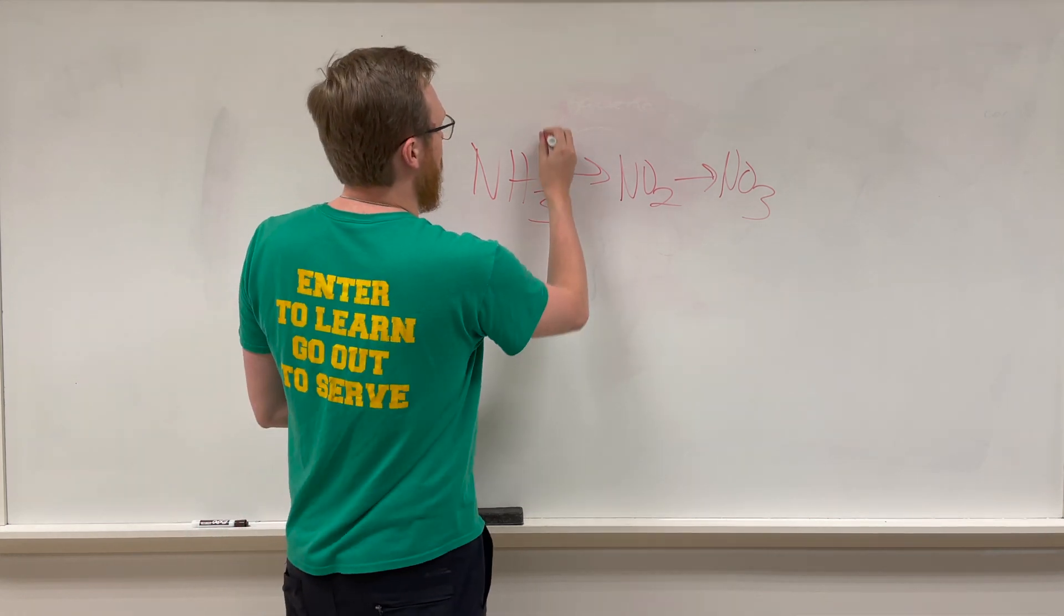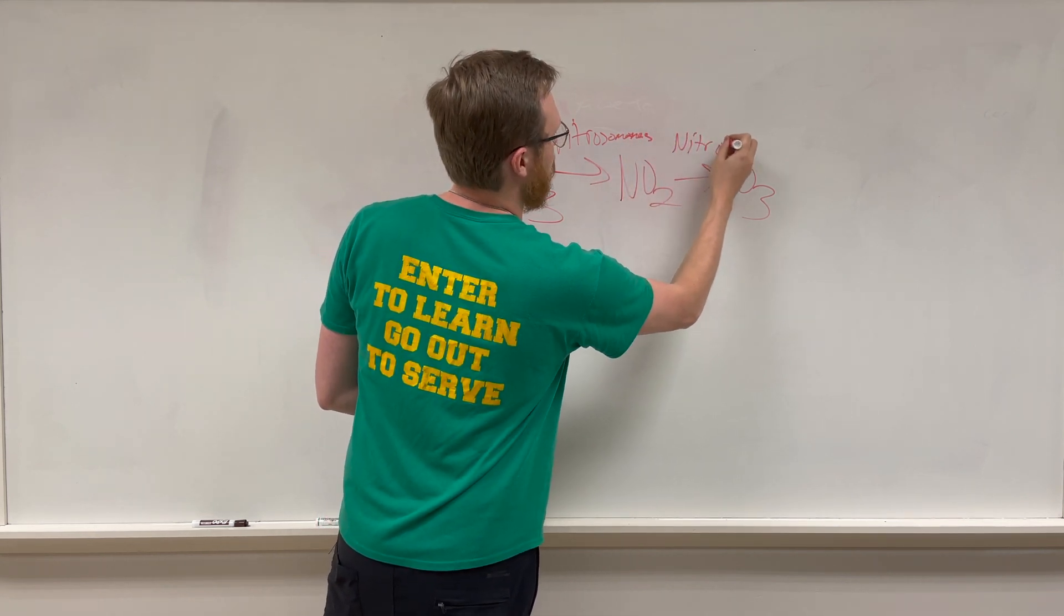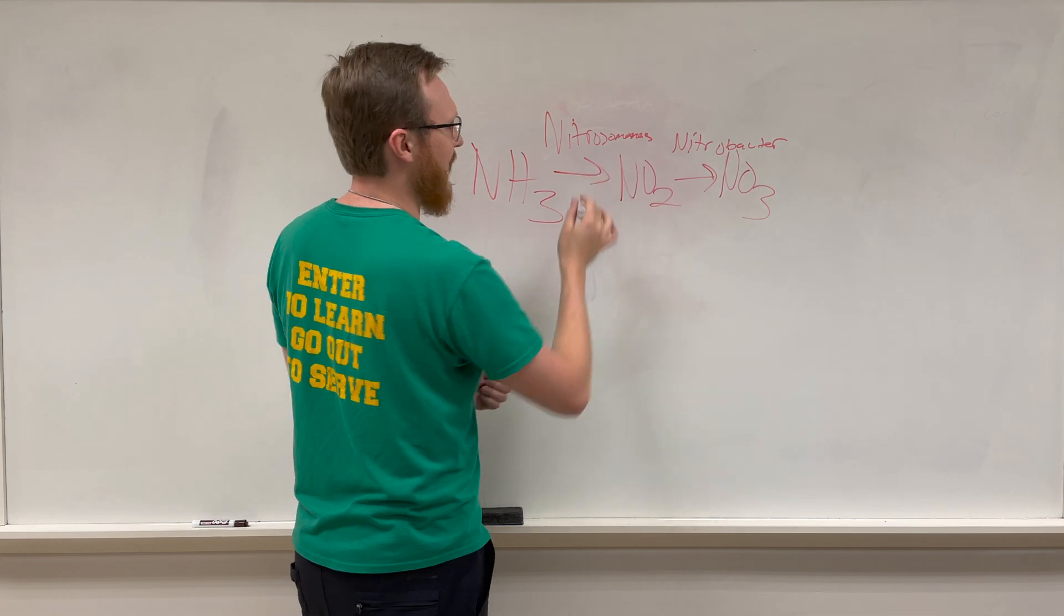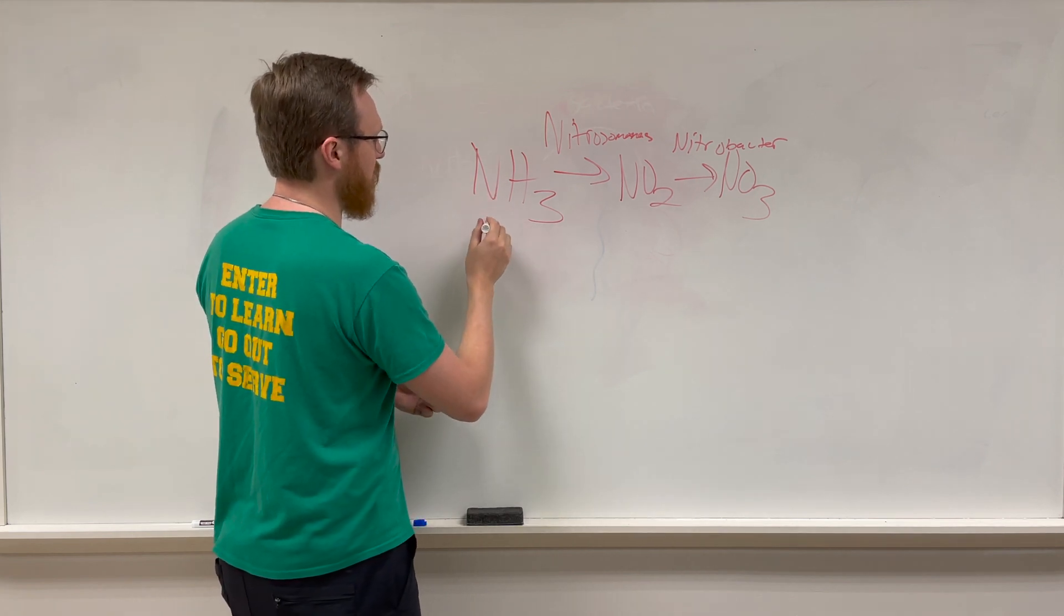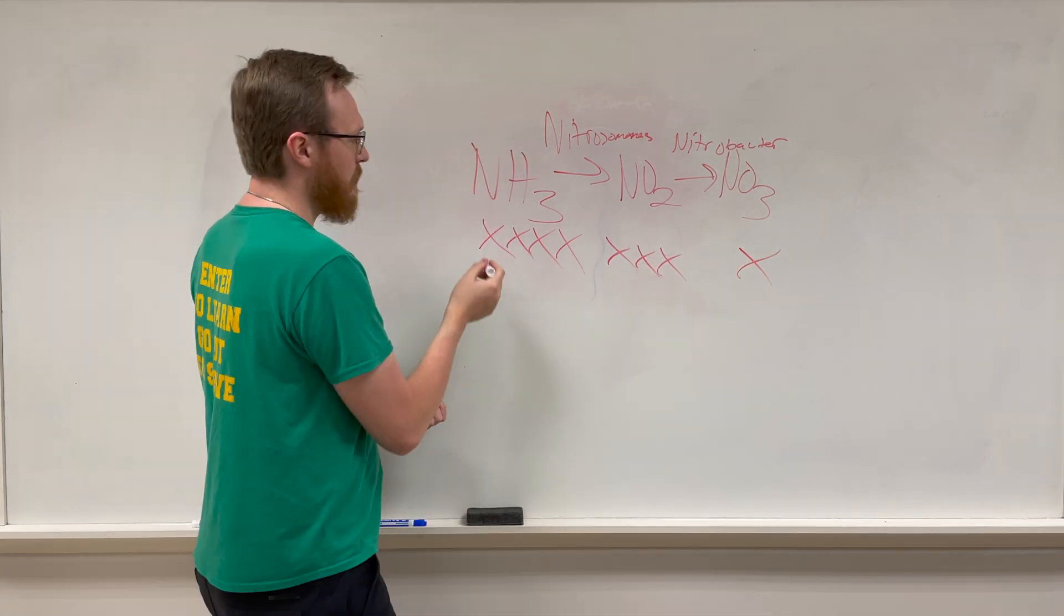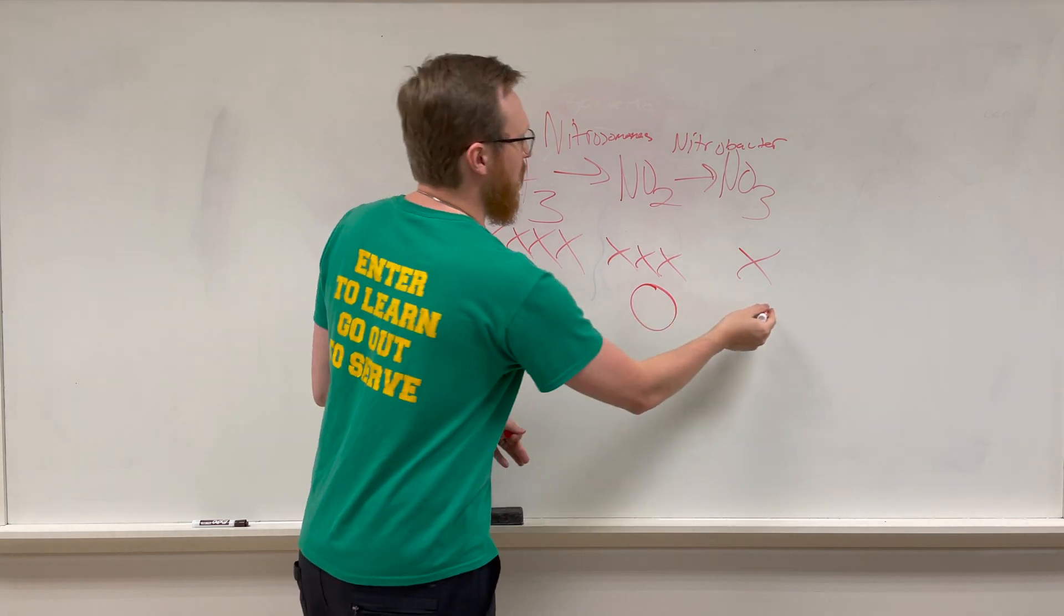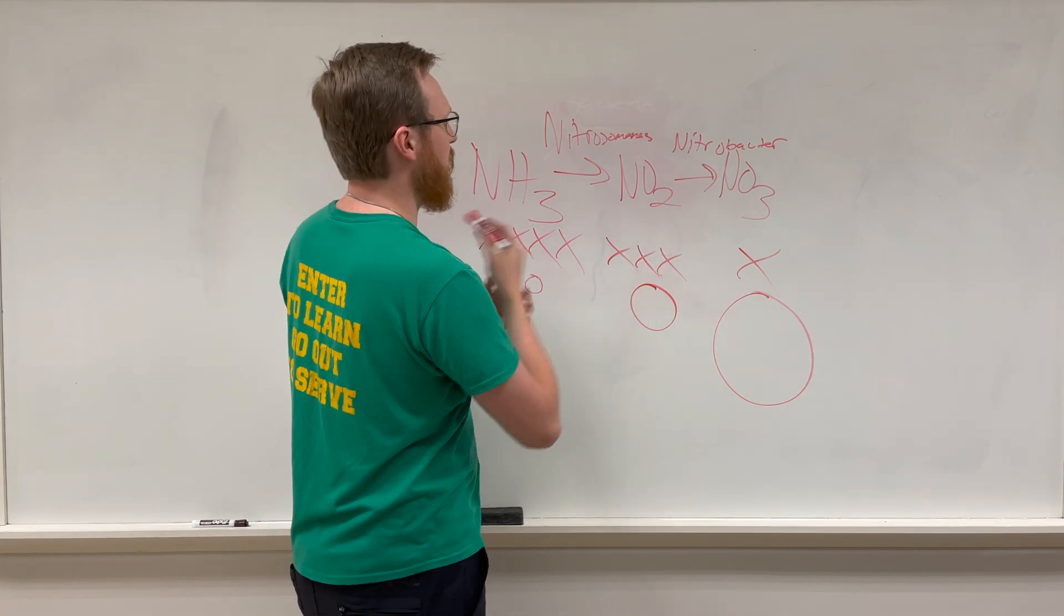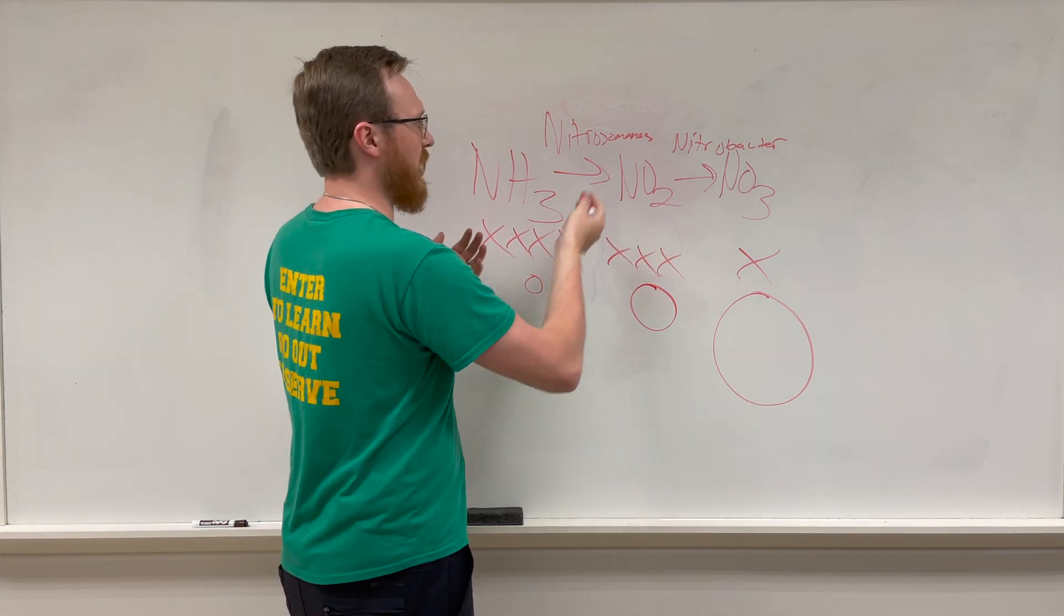The next step is that you have bacteria, nitrosomonas and nitrobacter bacteria, that are converting and utilizing the ammonia and the nitrite as an energy source and are then converting it to less and less harmful products. This is very bad, this is triple X, and this is probably X, meaning a very small amount of ammonia is going to kill fish, equally a larger amount of nitrite, then an even larger amount of nitrates.